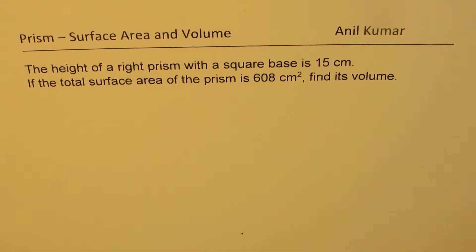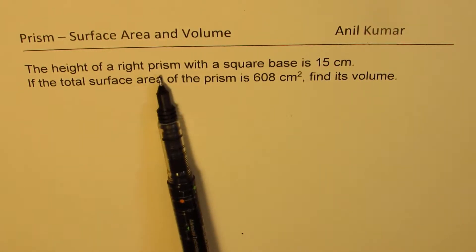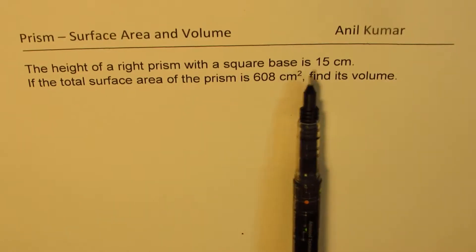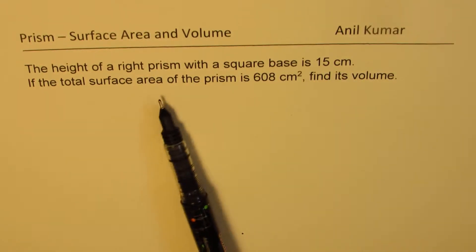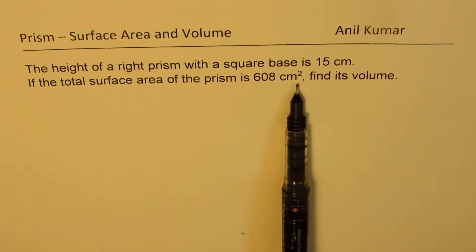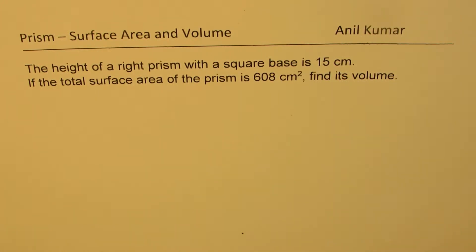I'm Anil Kumar, sharing with you a very interesting question based on prism surface area and volume. The question here is: the height of a right prism with a square base is 15 centimeters. If the total surface area of the prism is 608 centimeters squared, find its volume.